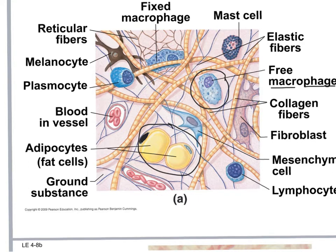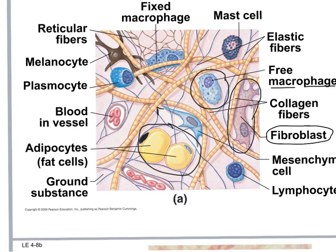Another cell is the fibroblast — a big cell that produces the fibers. We can see three distinct types of protein fibers. The long yellow ones are collagen fibers. Collagen fibers are bendy — you have them in your bone, which lets it bend before it snaps, and in your skin.